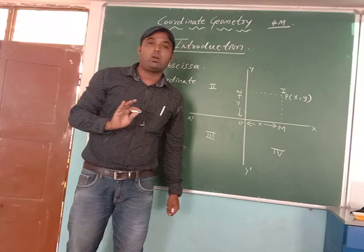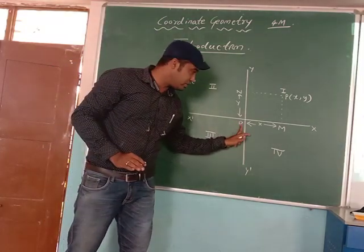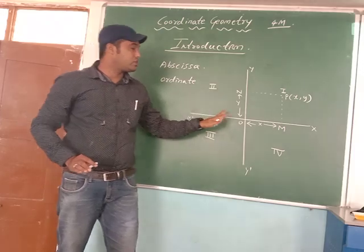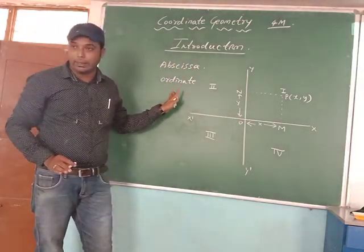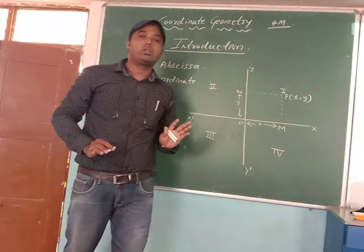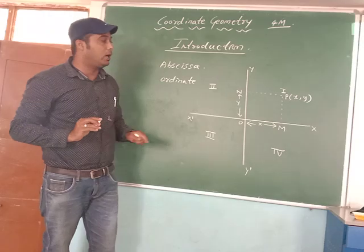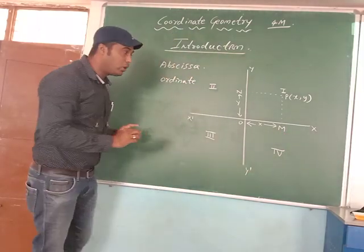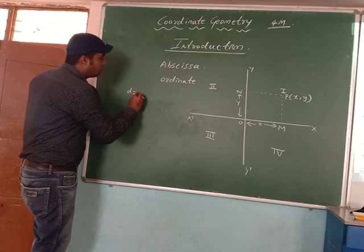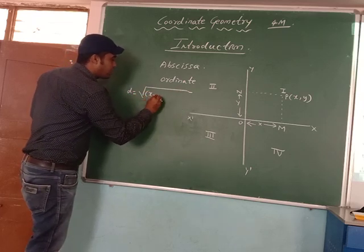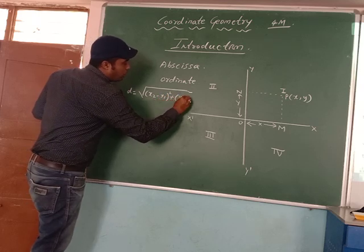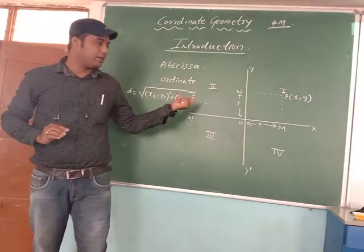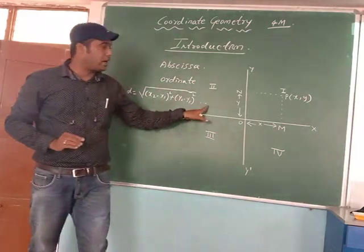These two questions have been repeated in your examination several times. Let me revise once again: the distance of P(x, y) from the X-axis is called Abscissa, and the distance of P(x, y) from the Y-axis is called Ordinate. Now, after that, we are going to discuss the distance formula. The unit may be centimetre or metre, so in general we will write as units.